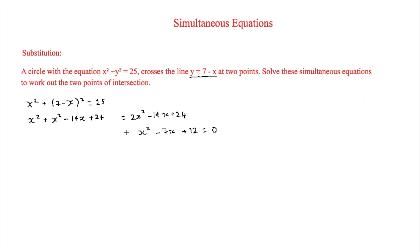We can factorise this into two brackets: (x minus 3)(x minus 4) equals 0, which means x equals 3 and x equals 4.